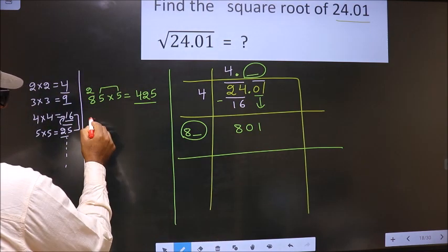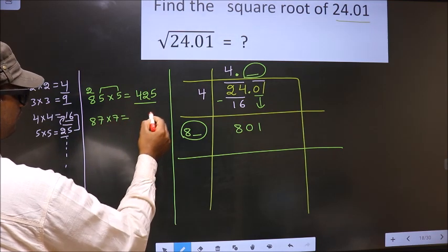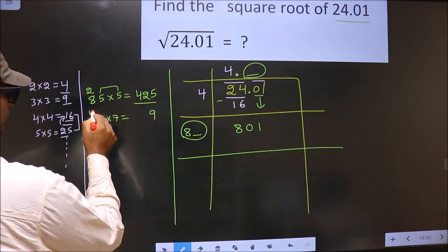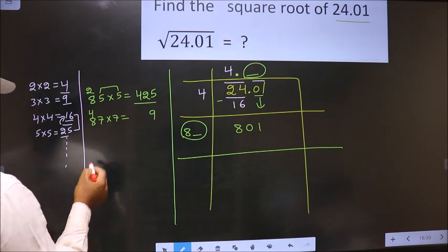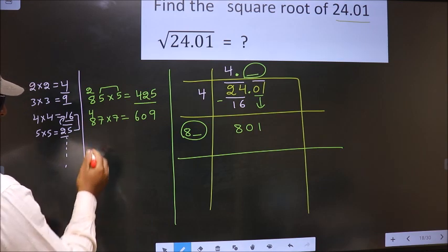So if we take 7, we should also multiply by 7. 7 into 7, 49. So 87 times 7, 56 plus 4, 609. So this also far from 801.